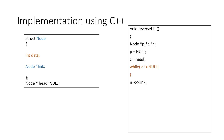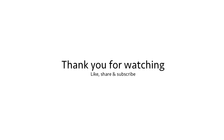Inside the loop, we equate the next pointer to the link part of the current node, then point the link part of the current node to the previous node, increment the previous pointer by equating it to the current pointer, and finally increment the current pointer by equating it to the next pointer. After the loop, we equate head equal to p, pointing the head to the last element of our linked list, which becomes the first element of our reversed linked list. The code is linked in the description. Thank you for watching.